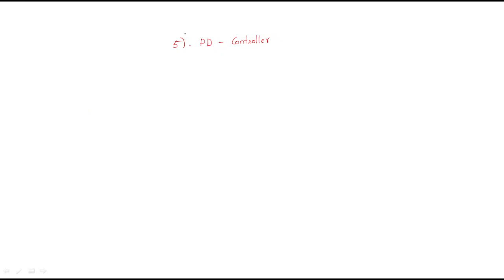Hello everyone. In this session we will discuss the PD controller. PD represents P for proportional and D for derivative, so it is a combination of both proportional and derivative. Proportional gain is KP and derivative is S into KD.